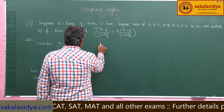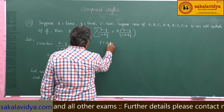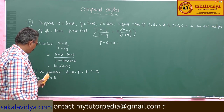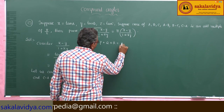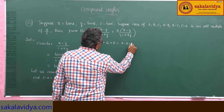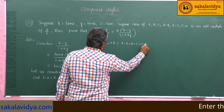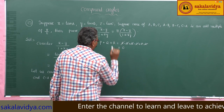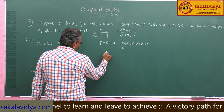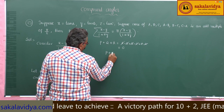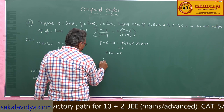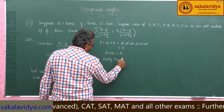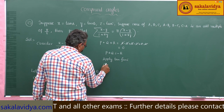Now, p plus q plus r is equal to (a minus b) plus (b minus c) plus (c minus a). The a's cancel, b's cancel, c's cancel — we get 0. So p plus q plus r equals 0, which means p plus q is equal to minus r.